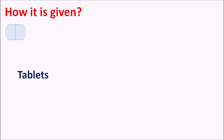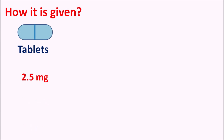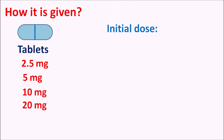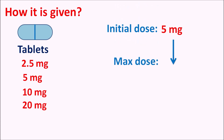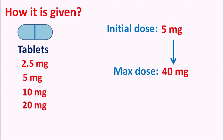How is it given? This drug is available as tablets at different strengths such as 2.5 mg, 5 mg, 10 mg, and 20 mg. The initial dose is started at 5 mg, but the dose can be increased up to a maximum of 40 mg. At high doses it can produce severe bradycardia and peripheral edema, so care should be taken. It should not be stopped suddenly in order to prevent any relapse of angina or myocardial infarction; the dose should be slowly tapered over 1 to 2 weeks to minimize the risk of cardiovascular complications.